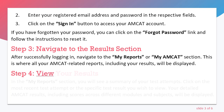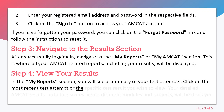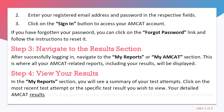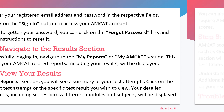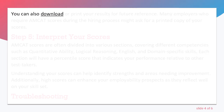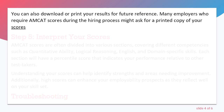Step 4: View your results. In the My Reports section, you will see a summary of your test attempts. Click on the most recent test attempt or the specific test results you wish to view. Your detailed AMCUT results, including scores across different modules and subjects, will be displayed. You can also download or print your results for future reference. Many employers who require AMCUT scores during the hiring process might ask for a printed copy of your scores.